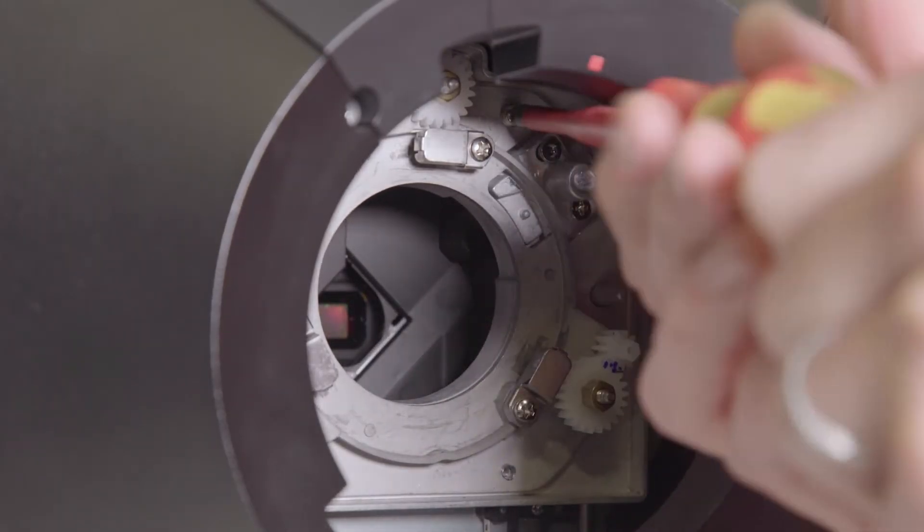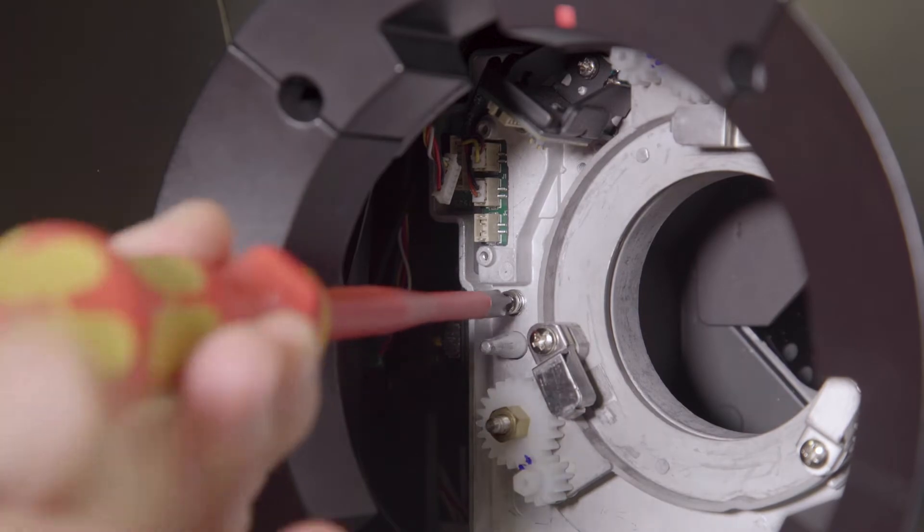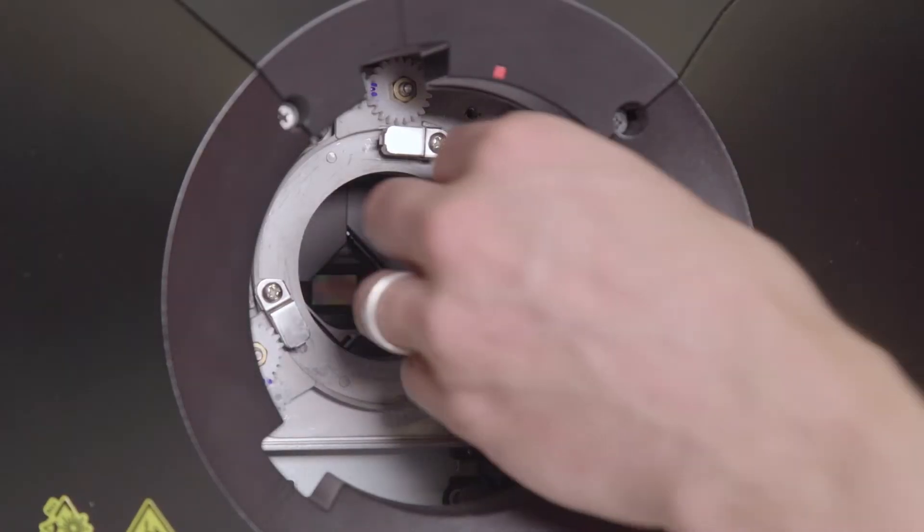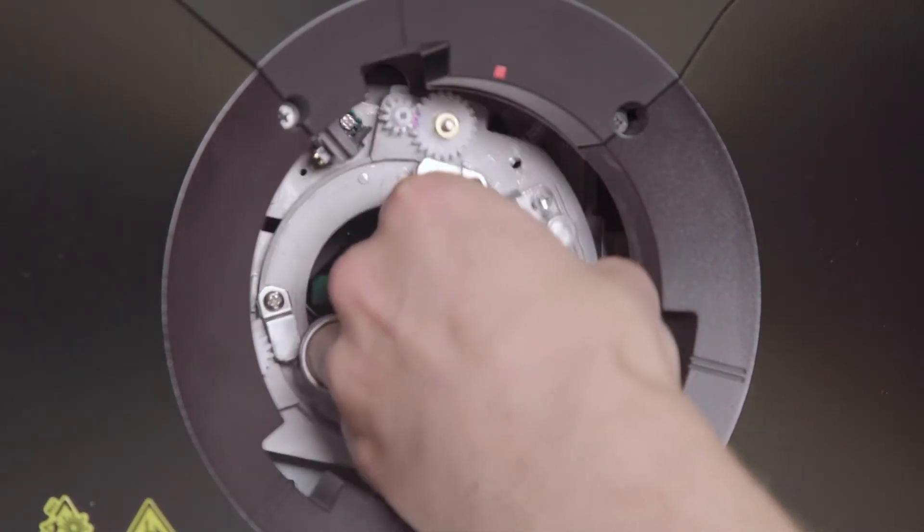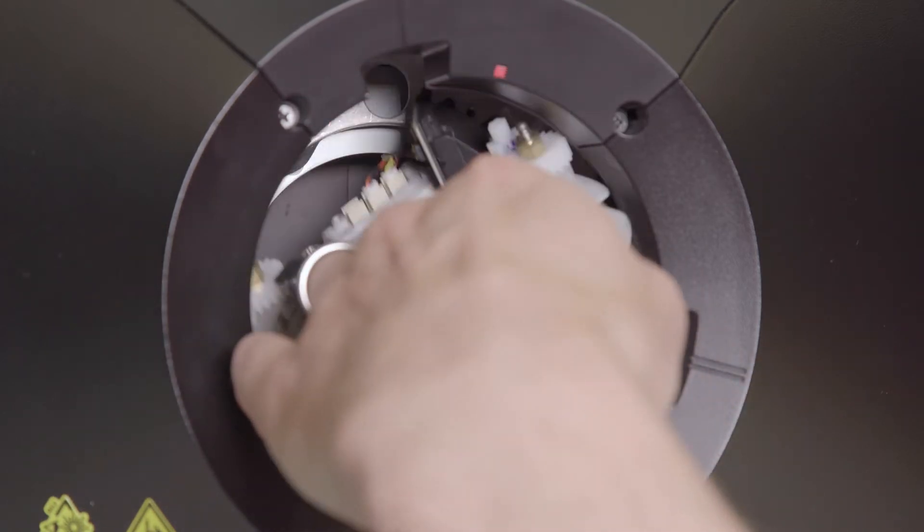Retain these screws to fit the new UST adapter later. Rotate the adapter and remove from the projector. Ensure to be careful not to scratch the aperture casing.